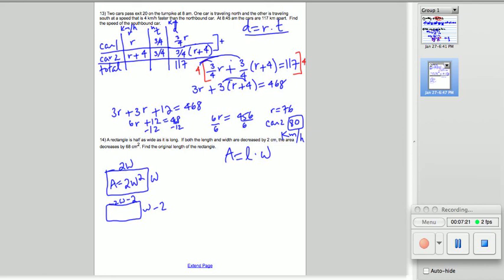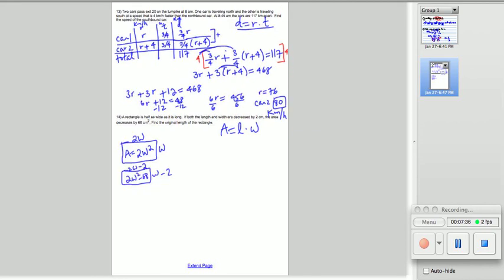Now, in the new rectangle, it's decreased by 68 centimeters. So, the original one was 2W squared, its area. And now, this new one is decreased by 68 square centimeters. So, we need to set up an equation. Well, the area of this new rectangle is length times width. The length is 2W minus 2. And the width is W minus 2. And the area is 2W squared minus 68.